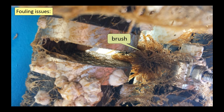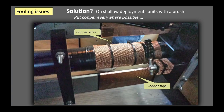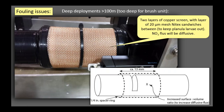Our buoys stay out for a year, so it's not too surprising they get heavily fouled. The solution we've adopted for shallow sensors with a brush is to put copper everywhere — wrapped around the aluminum, on the handle of the brush, on either side of the brush. For ones too deep for a brush, we use a system with PVC rings surrounded by layers of copper screening, followed by 20 micron Nitex mesh, then another layer of copper screening. We space them out so the surface area of our screening and mesh is large relative to the volume of water that has to pass through to the sensor.